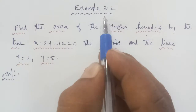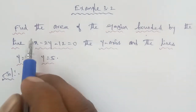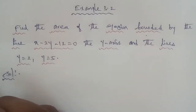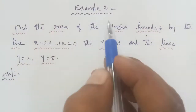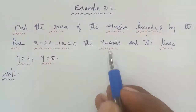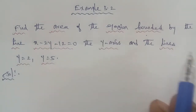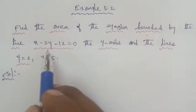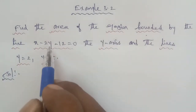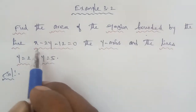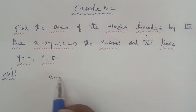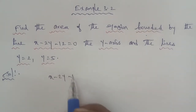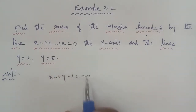Exam 3.1 uses the same process, so the difference is possible. Exam 3.1 uses the x-axis, while this one uses the y-axis. So first, the equation of the straight line: x minus 2y minus 12 equal to 0.